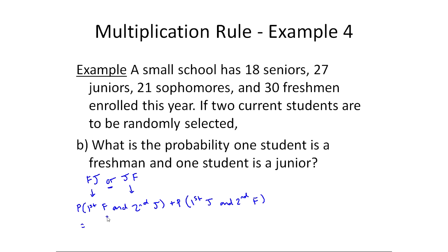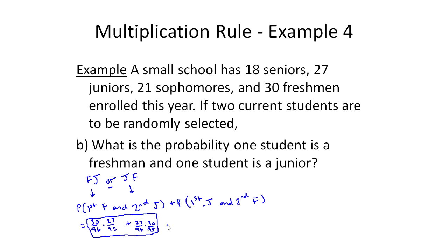Now I'll go through the calculation. The probability the first is a freshman: there are 96 total students and 30 freshmen, so 30/96. Then multiply by the probability the second is a junior given the first was a freshman: there are 95 students left and still 27 juniors, so 27/95. Plus: probability the first is a junior is 27/96. Then times the probability the second is a freshman given the first was a junior: there are 95 students left but you picked a junior first, so there are still 30 freshmen, giving 30/95. Whatever this comes out to as a decimal or percentage is your final answer.